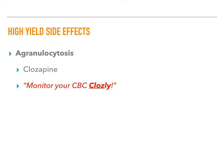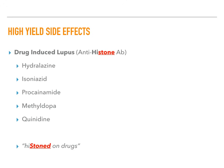Drug-induced lupus is another high-yield topic. The causative drugs are hydralazine, isoniazid, procainamide, methyldopa, and quinidine. There's no great mnemonic — you have to memorize them. The antibody associated is the anti-histone antibody. Remember: you get 'histoned off' of drugs — anti-histone for drug-induced lupus. This commonly appears on exams.